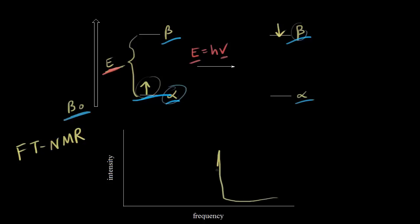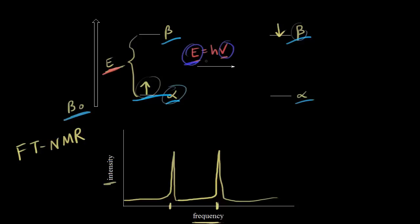On a simple NMR spectrum, a signal appears as a peak at a certain frequency, with intensity on the vertical axis representing the number of absorptions. It's possible to get different signals at different frequencies — each signal corresponds to a different energy difference between the alpha and the beta spin state. These different frequencies are what help us understand the structure of molecules, and I'll get into this in more detail in the next video.